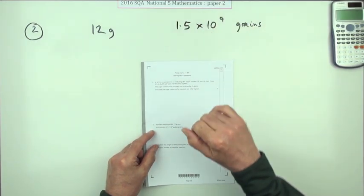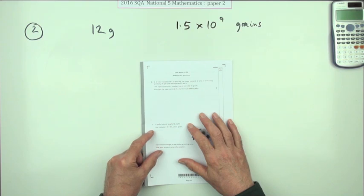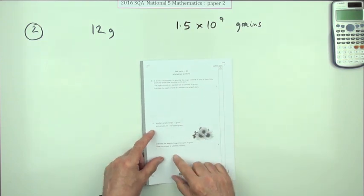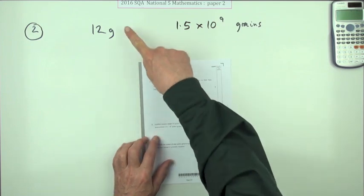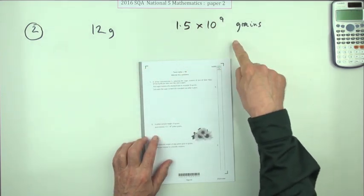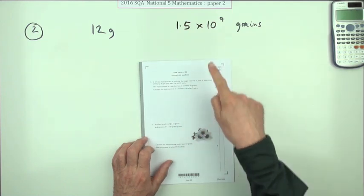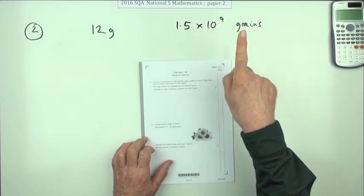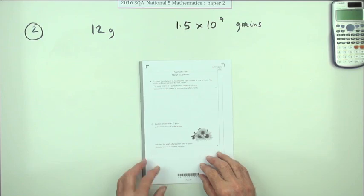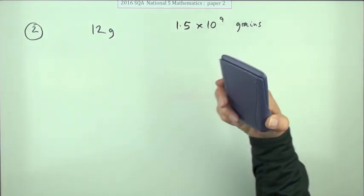So question two from Paper 2 of the 2016 National 5, two marks for this scientific notation question. A pollen sample weighs 12 grams but it's got this number of grains in it. What's the weight of one grain? You have to divide by this because it'll be tiny. Give your answer in scientific notation, but your calculator does that anyway.